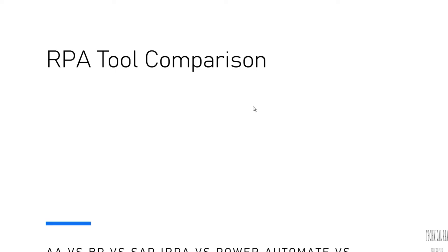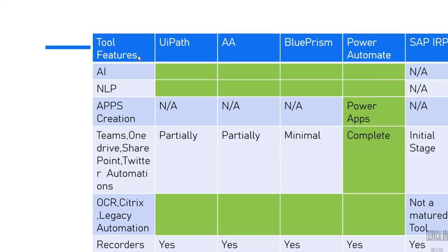Those tools are in high range in the market. When you talk about market strategy, UiPath is in first place, and Automation Anywhere — which is A360 version 22, a cloud version — is in second position. Blue Prism is in third level, and Power Automate with Power Apps, which is Microsoft's product, is in fourth position.